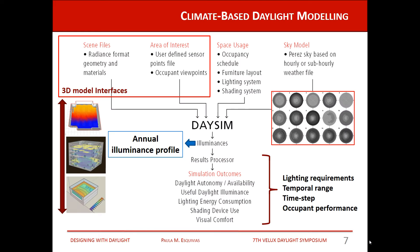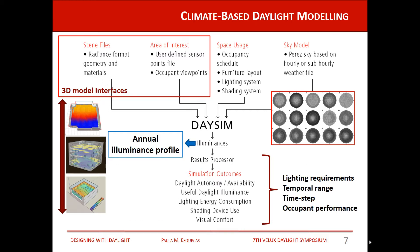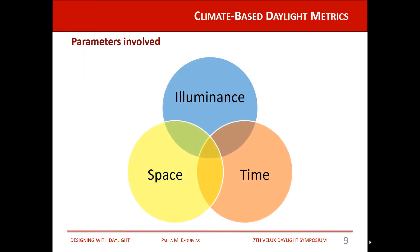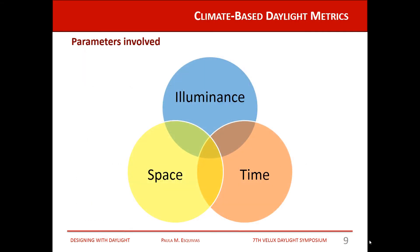What we get using climate-based daylight modeling is an annual illuminance profile that is processed to derive the climate-based daylight metrics. The annual illuminance profile gives us the temporal performance for each sensor point, as seen in the graph. The file contains all the information for all sensor points in the work plane. The parameters involved in obtaining the climate-based daylight metrics are illuminance, space, and time.